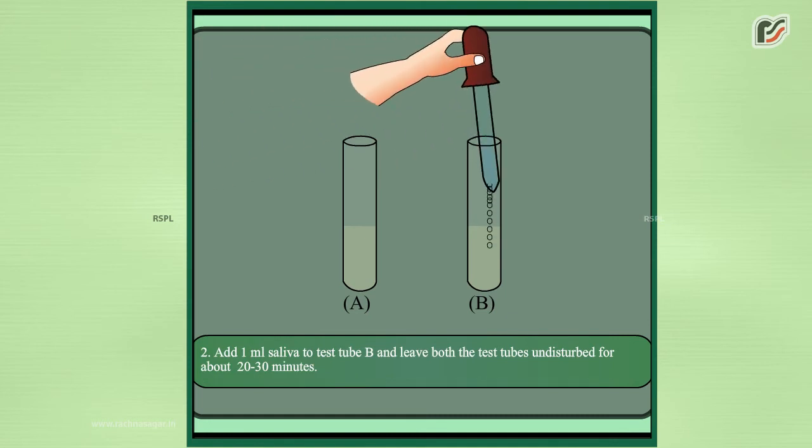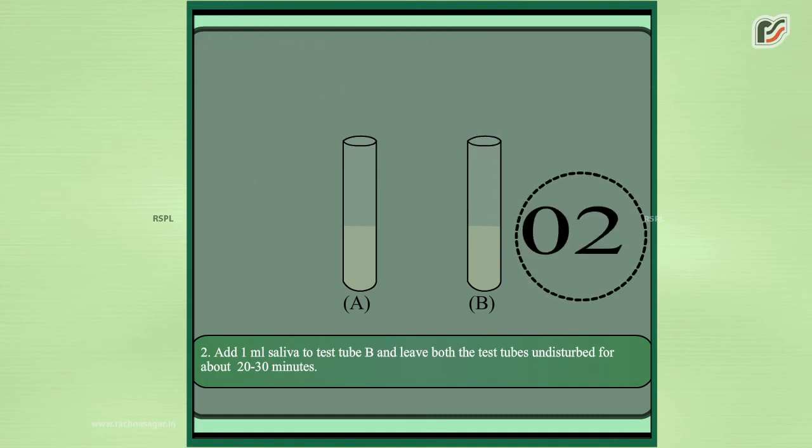2. Add 1 ml saliva to test tube B and leave both the test tubes undisturbed for about 20-30 minutes.